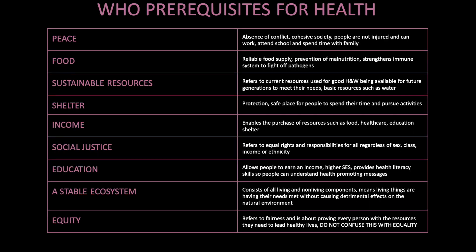The WHO prerequisites for health. Peace refers to the absence of conflict — a cohesive society in which people are not injured and can work, attend school and spend time with family. Food refers to having a reliable food supply; the prevention of malnutrition strengthens immune systems to fight off pathogens. Sustainable resources refers to current resources used for good health and well-being being available for future generations to meet their needs. Shelter provides a safe place for people to spend their time and pursue activities such as studying. Income enables the purchase of resources such as food, healthcare, education and shelter.